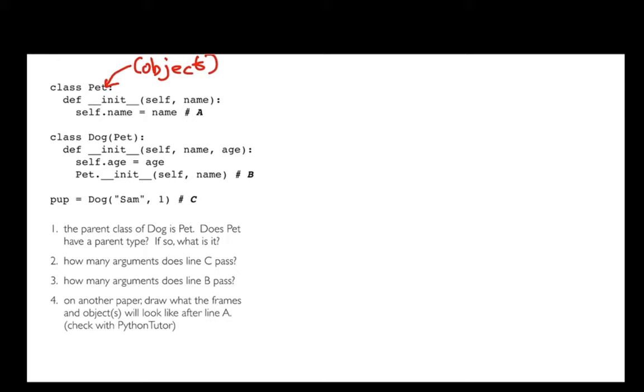The reason is that Sam goes to name, one goes to age, and what goes into self? A new object. Here I'm getting a new object. I do actually get three things in because this is a special method and one of them is being passed in automatically for me. So object for the first answer, and how many does line C pass? That's three.